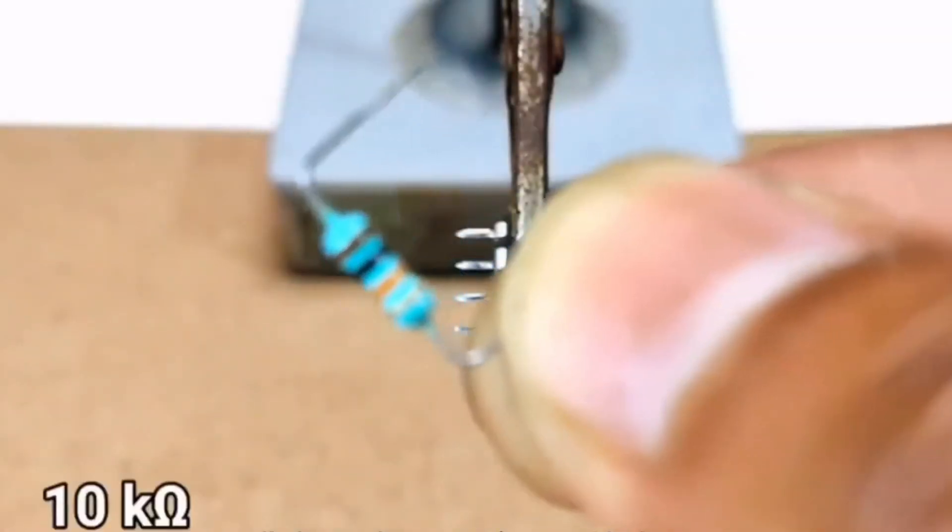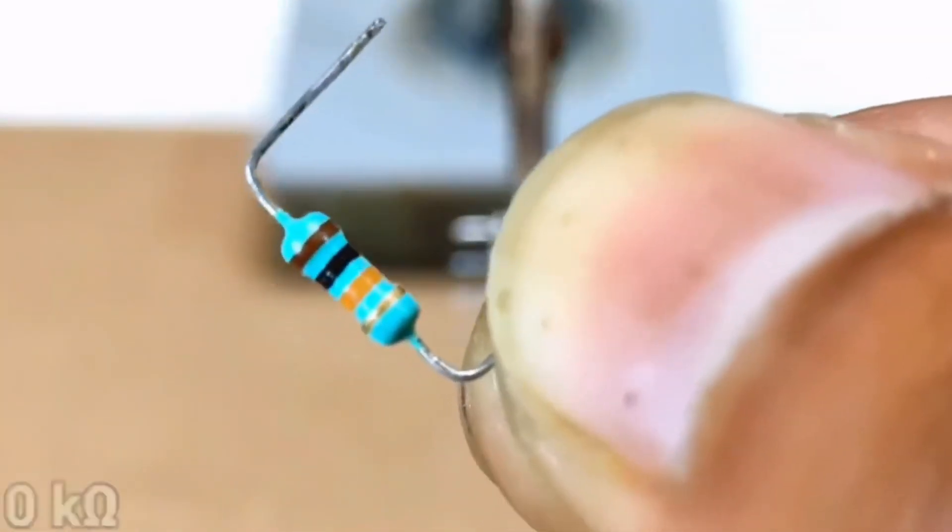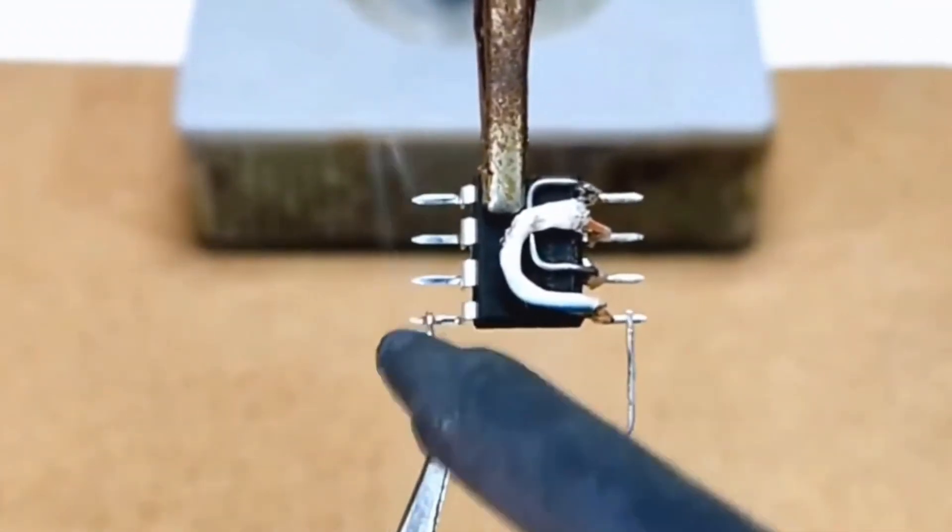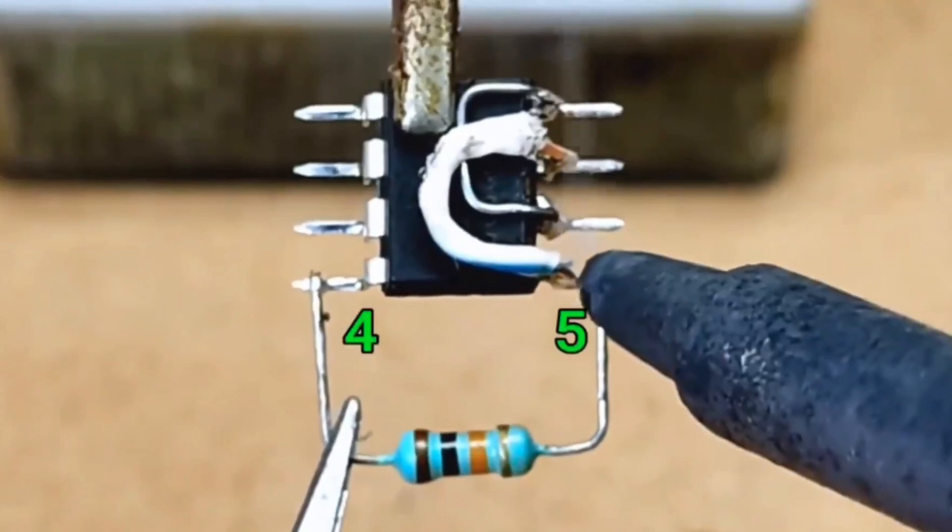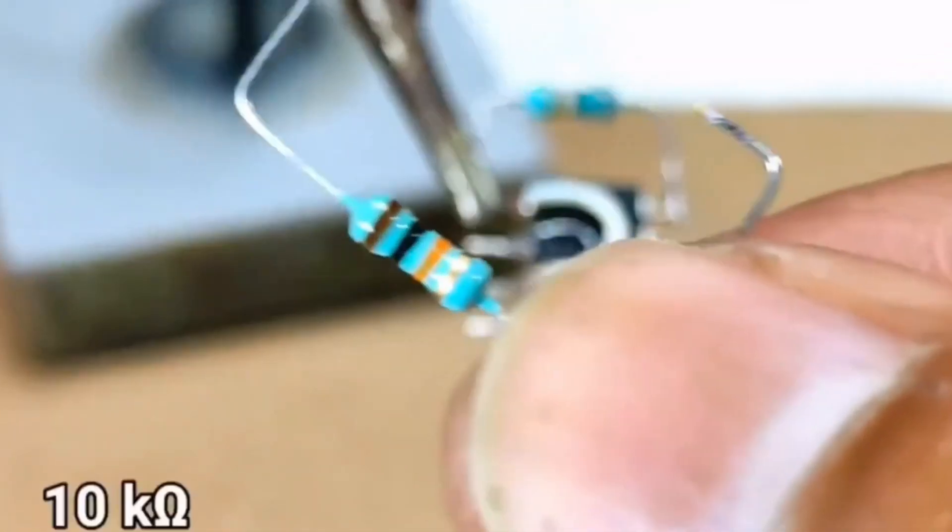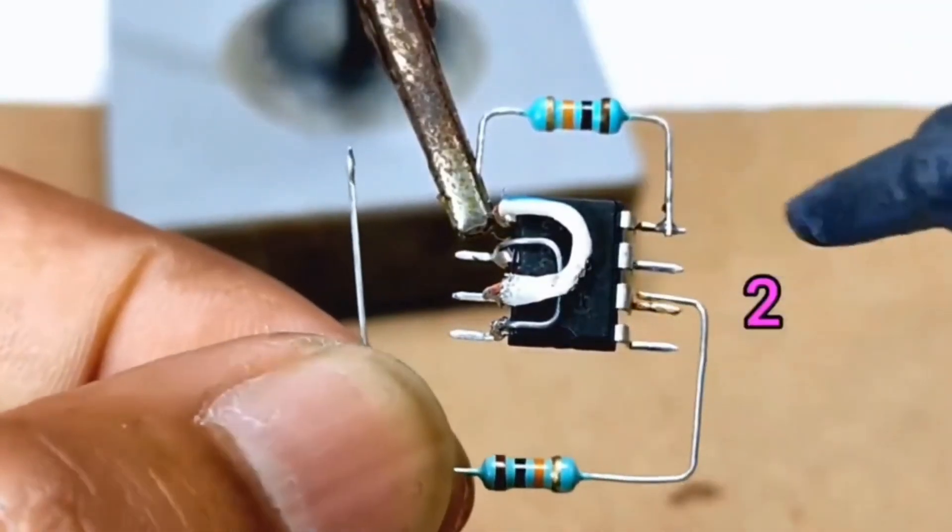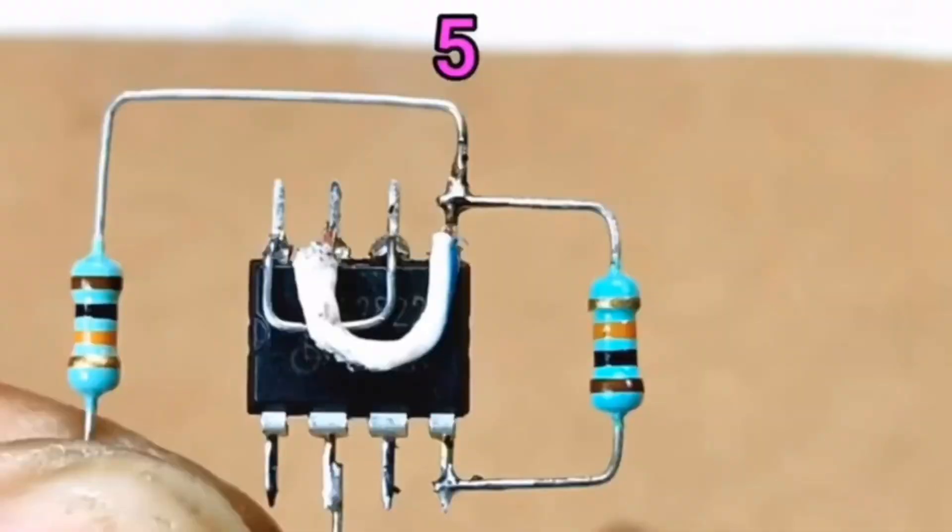Next, we need a 10-kilohm quarter-watt resistor, which we connect between pin 5 and pin 4 of the chip. This resistor serves as the lower voltage divider resistor for pin 5. Another 10-kilohm resistor is required as the upper voltage divider resistor for pin 5, which we connect between pin 2 and pin 5.